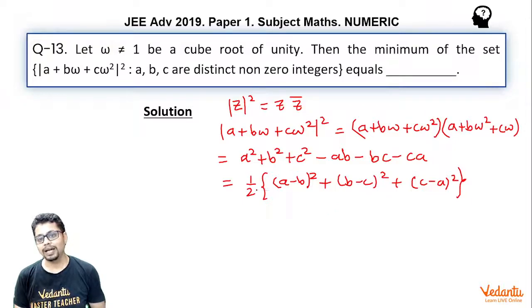Now to minimize the value of this expression given that a, b, c are supposed to be distinct integers, the best we can do to minimize is take a, b, c as consecutive integers. Why? Because for (a-b)² to be minimum, a and b should be as close as possible.